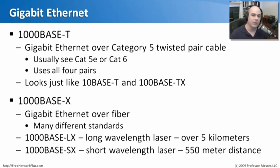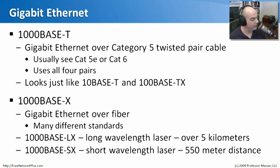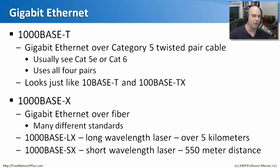If you want to use fiber for Gigabit Ethernet, you can run a standard called 1000Base-X. One variant is 1000Base-LX, which uses a long wavelength laser and can go over long distances — over five kilometers. If you're running Gigabit Ethernet over a short wavelength laser, it is the 1000Base-SX standard, which runs about 550 meters. Even with fiber we can go much longer distances than with copper.